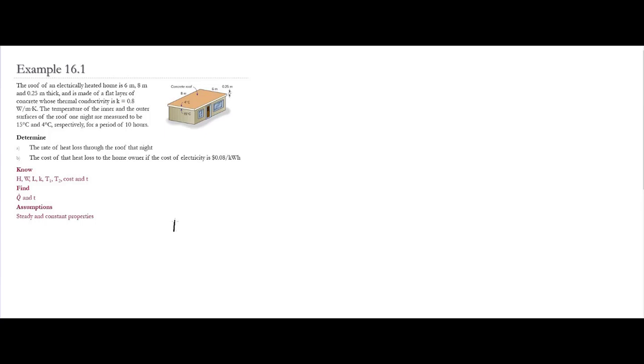So the first thing that we need to realize is what type of conduction we're dealing with. So if we have the roof, notice basically this is the schematic of the roof. So notice that we have two different surfaces: the surface on the top is all set at 4 Celsius, the bottom one is set at 15 Celsius.